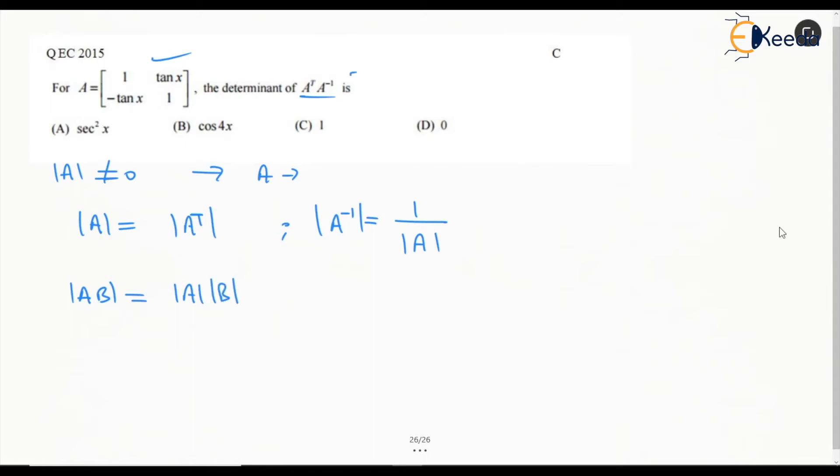So in this case determinant of A transpose A inverse is going to be determinant of A transpose into determinant of A inverse. And as per the conclusions we have, this is going to be determinant of A and this is going to be determinant of A inverse.